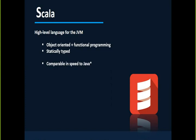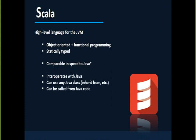Scala is comparable to Java with respect to speed. Another good advantage with Scala is that it interoperates very well with Java — meaning you can use any Java class inside your Scala code, and similarly you can use any Scala class inside your Java classes, and vice versa. We will see these examples in our Scala training — by the end of the course we'll see examples where we call Java code from Scala and Scala code from Java.